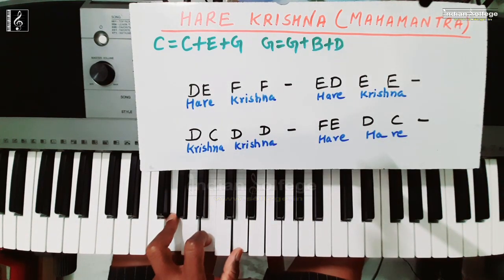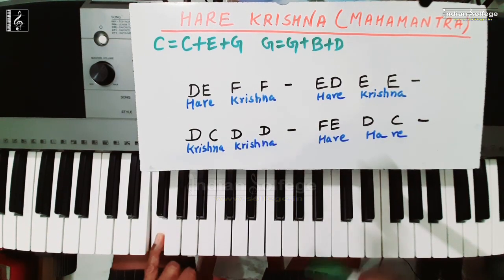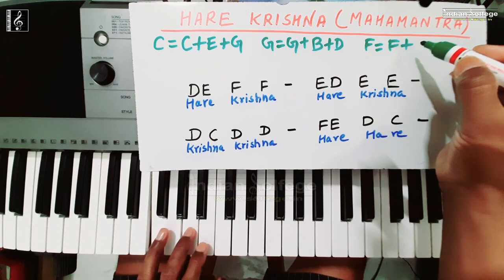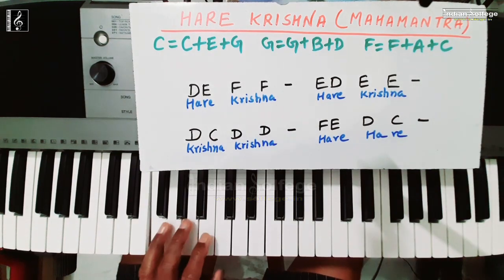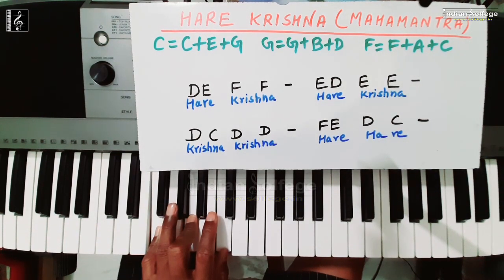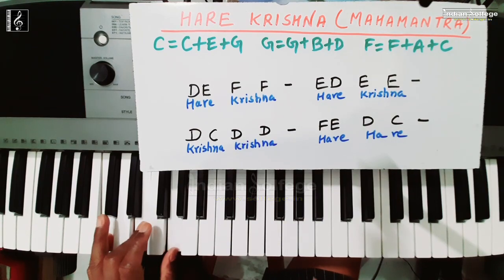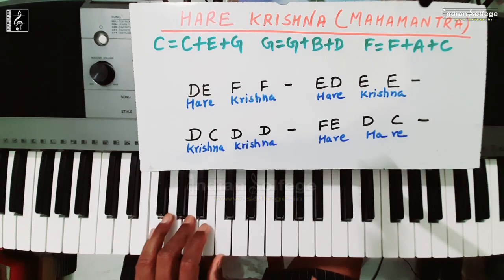तीसरा chord है subdominant — F major chord। F major कैसे बनेगा: F, plus A (G छोड़ दिया), and plus C। तो F A C — यह F major chord हो गया। Summary: पहला chord C major (C E G), दूसरा G major (G B D), तीसरा F major (F A C)।